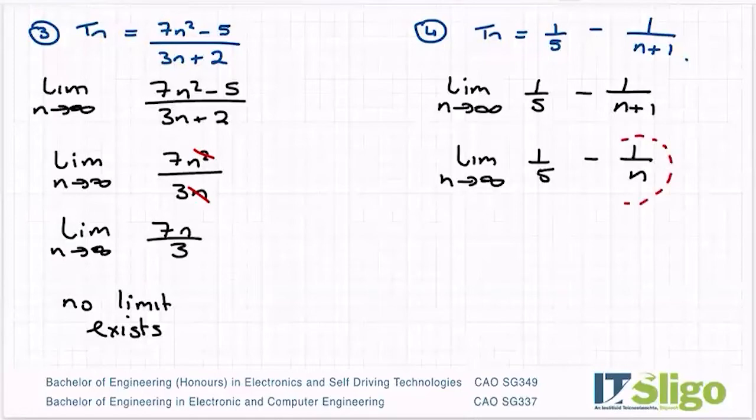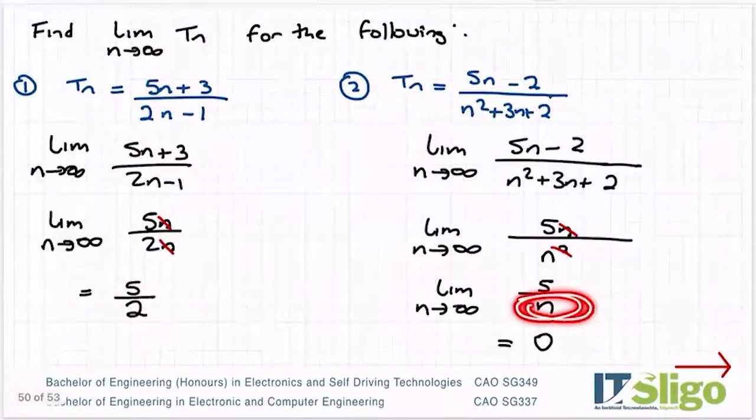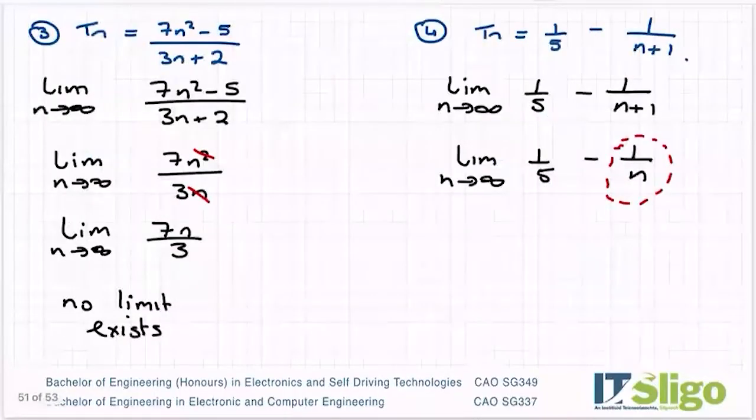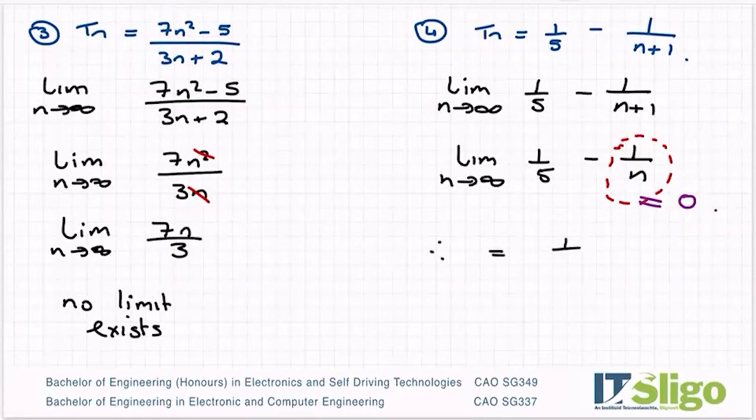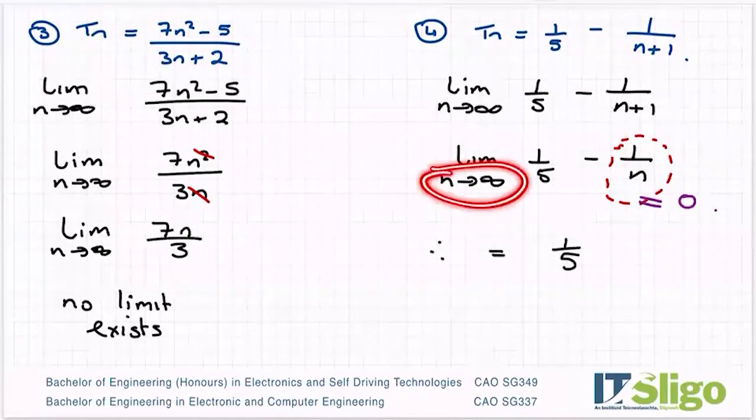Let's have a look at this number. So if you can remember what happened when n was on the bottom. So when n is a huge number, n is on the bottom, this whole thing approaches zero. So therefore, this one is equal to a fifth. So as n gets bigger, this approaches zero. So it's a fifth minus zero. So you're left with just a fifth.